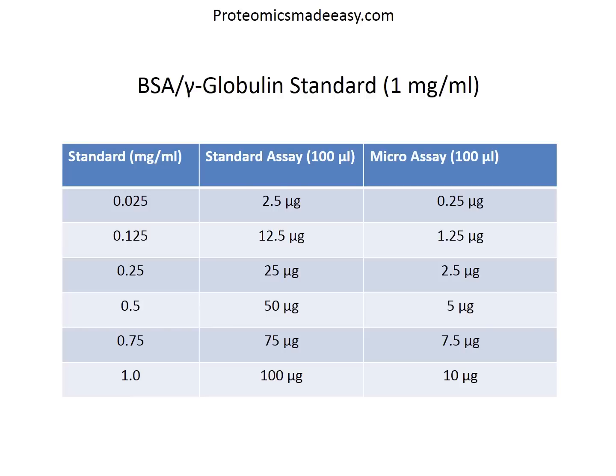Add 5 ml of protein reagent to each tube and mix well by inversion or gentle vortexing — avoid foaming, which will lead to poor reproducibility. Measure the absorbance at 595 nm of the samples and standards against the reagent blank between 2 minutes and 1 hour after mixing. The 100 µg standard should give an absorbance value of about 0.4. The standard curve is not linear, and the precise absorbance varies depending on the age of the assay reagent. Consequently, it is essential to construct a calibration curve for each set of assays.